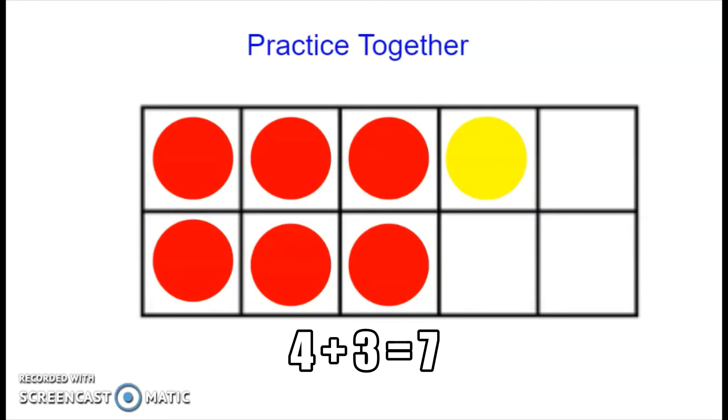Great. Now let's take a look at our 10 frame picture. How many dots are on the top? There are four. How many dots are on the bottom? Yep. There are three.